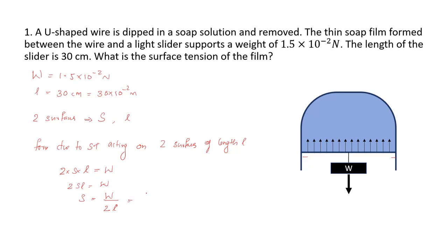Surface tension equals 1.5 × 10⁻² divided by 2 × 30 × 10⁻² Newton per meter. Since 3 divided by 2 is 1.5, and accounting for the factor of 2, our answer is 2.5 × 10⁻² Newton per meter. This is the value of our surface tension.